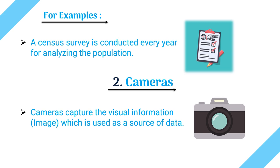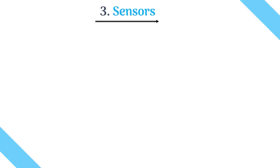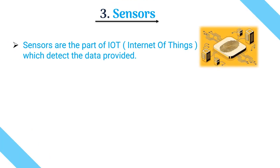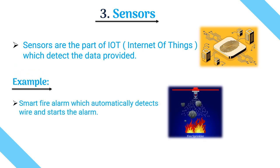The second source is cameras. A camera captures visual information, and that image is used as a source of data. The third source is sensors. Sensors are part of IoT — Internet of Things. Examples of IoT include smart watches or smart fire alarms which automatically detect fire and start the alarm. This happens when a fire sensor sends data to the IoT device — if the sensor detects heat or fire, the alarm starts.